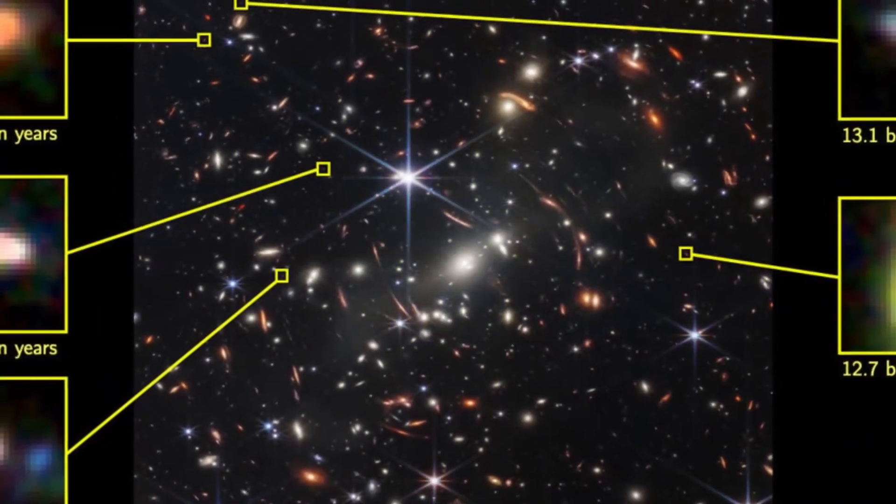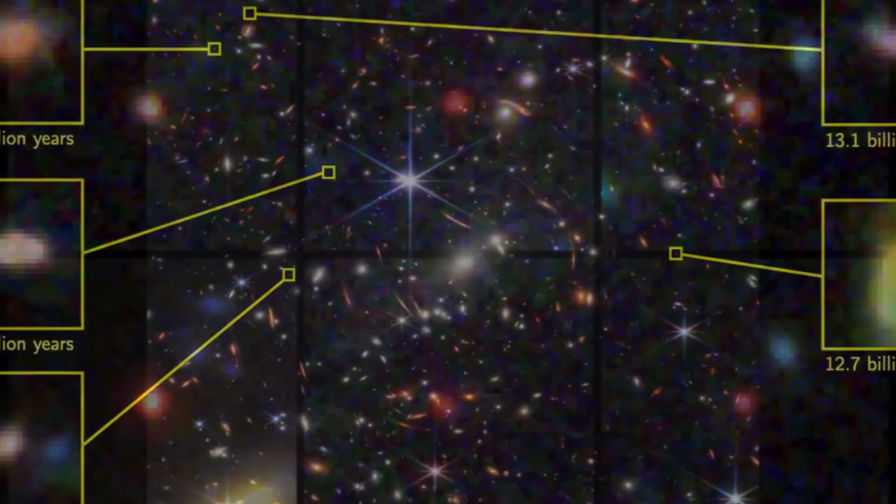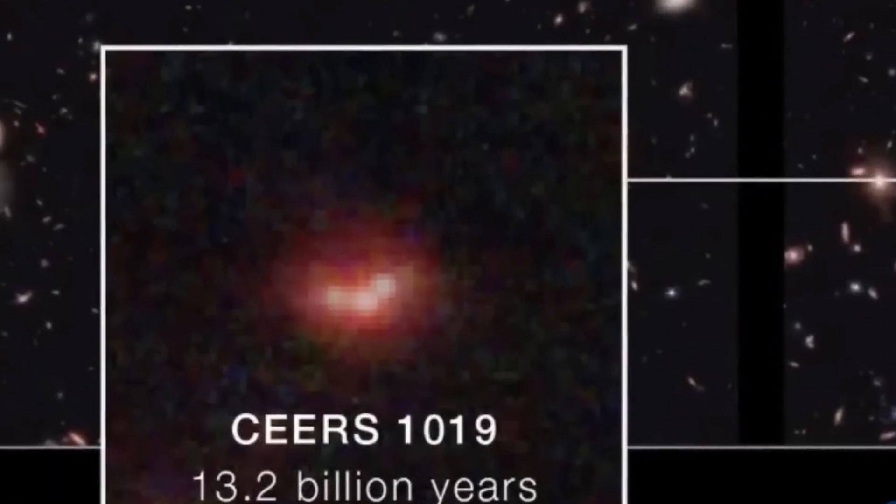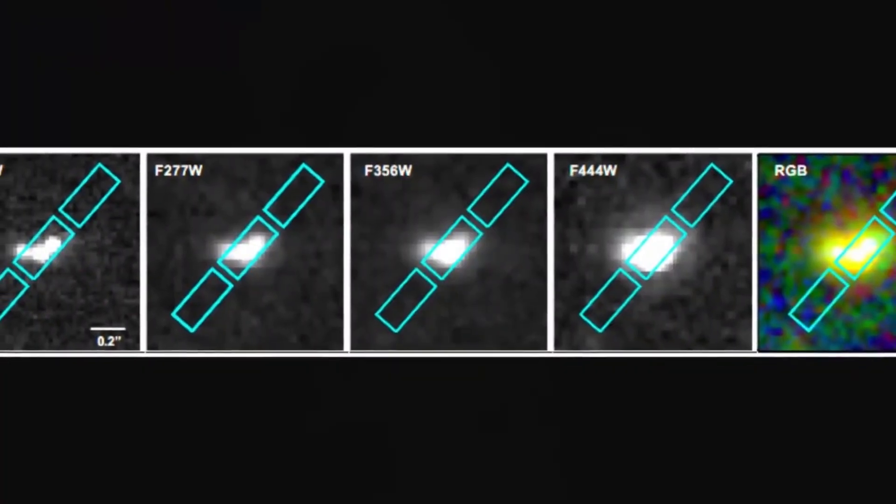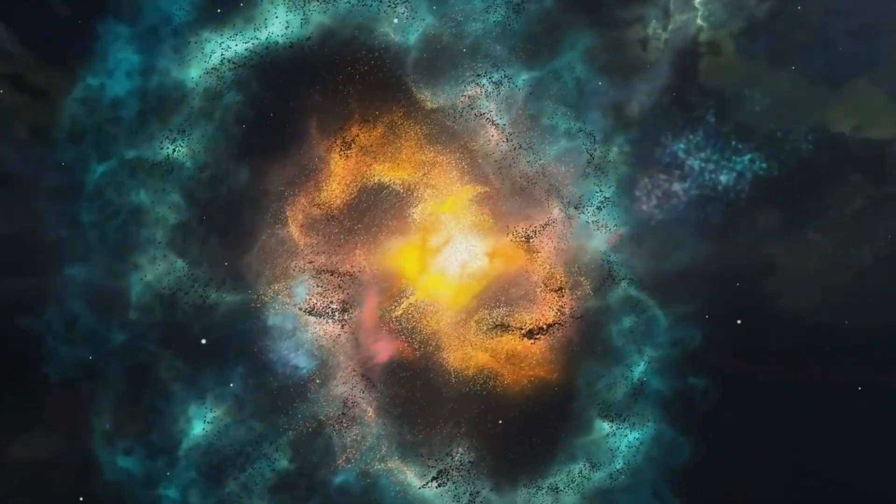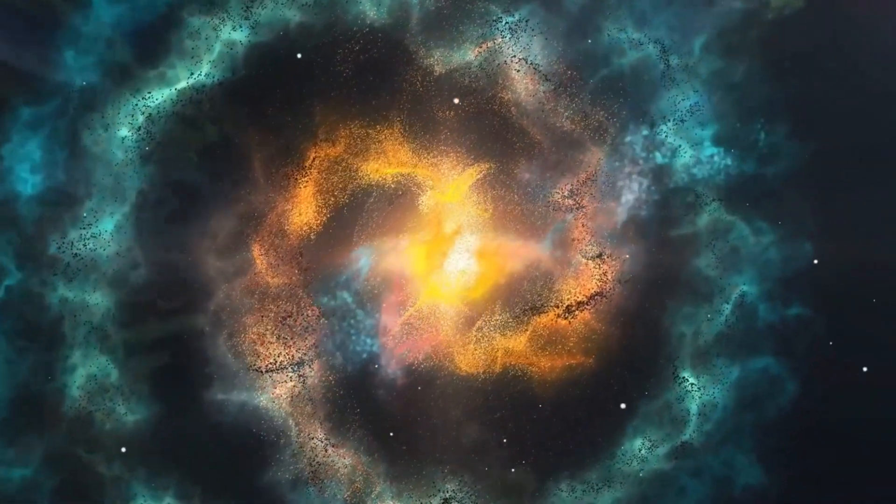Among Webb's most astonishing discoveries are the oldest and most distant black holes ever observed, hidden within galaxies like GN-Z11 and Cirrus 1019. These findings are peering into the cosmic dawn, mere hundreds of millions of years after the Big Bang.